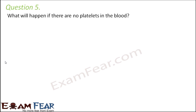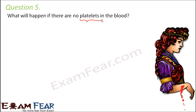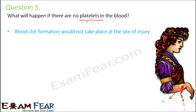Question number 5: What will happen if there are no platelets in the blood? We spoke about the various components of blood: RBCs, WBCs, plasma, and platelets. Platelets, also called thrombocytes, are responsible for blood clotting. Whenever you get a cut, bleeding starts, but after some time it stops due to clot formation at the site of injury. If there are no platelets, no clot formation will happen, bleeding will continue for an indefinite period, and there will be excessive loss of blood which can even cause death. So blood clot formation would not take place and bleeding would not stop.